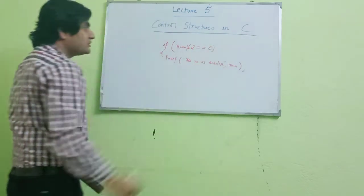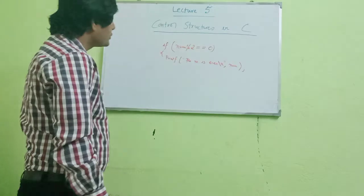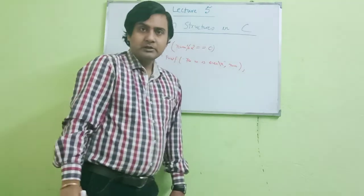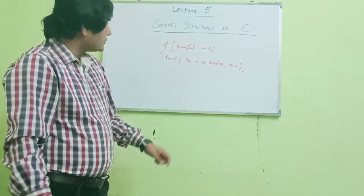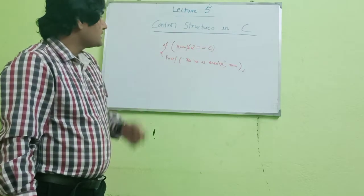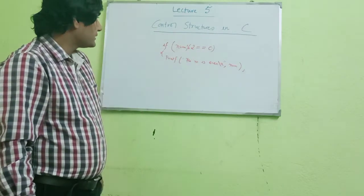Because you know that whenever a modulo 2 division yields 0, that means the number is even.